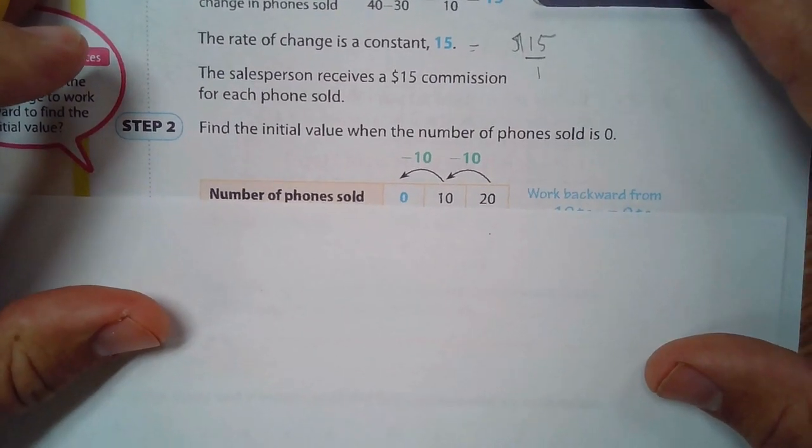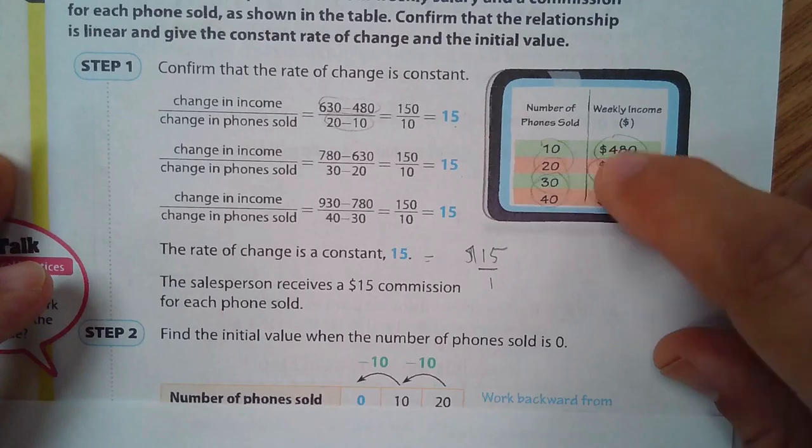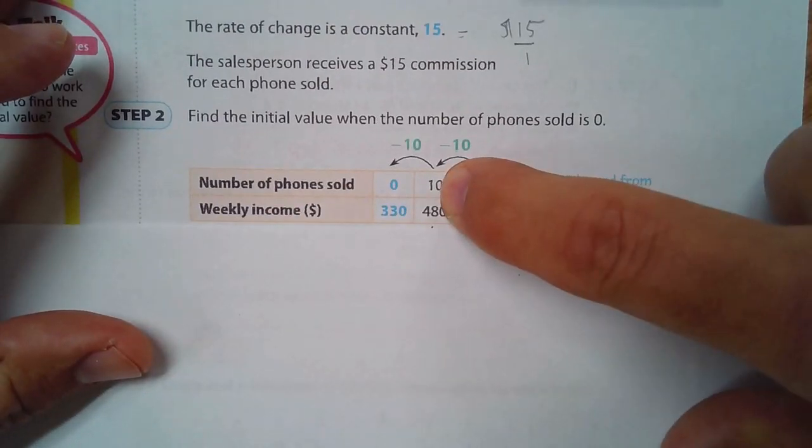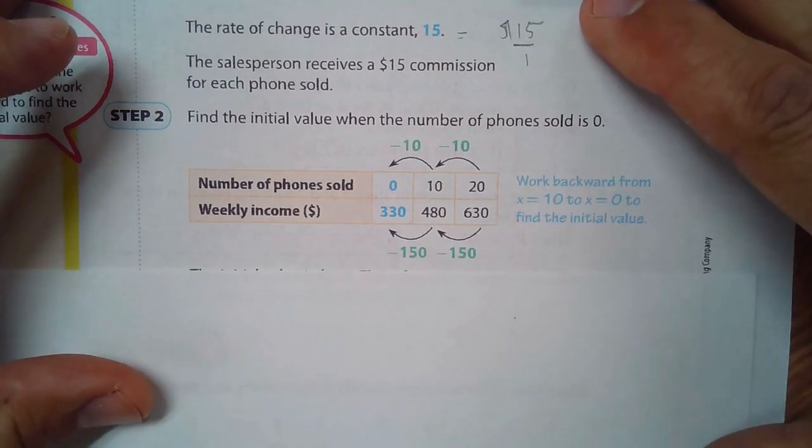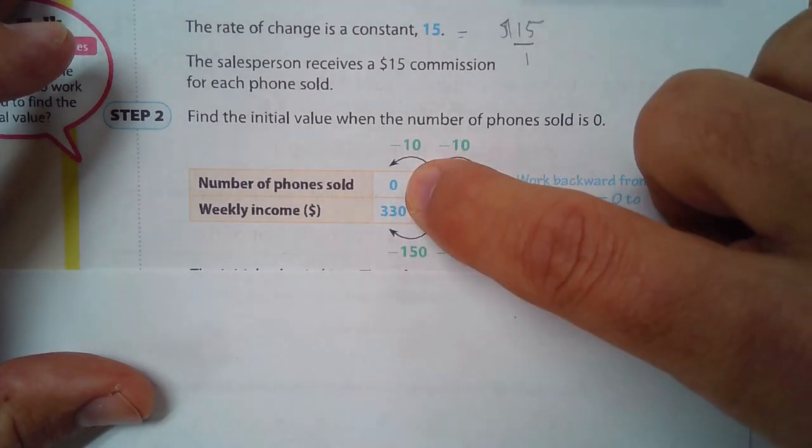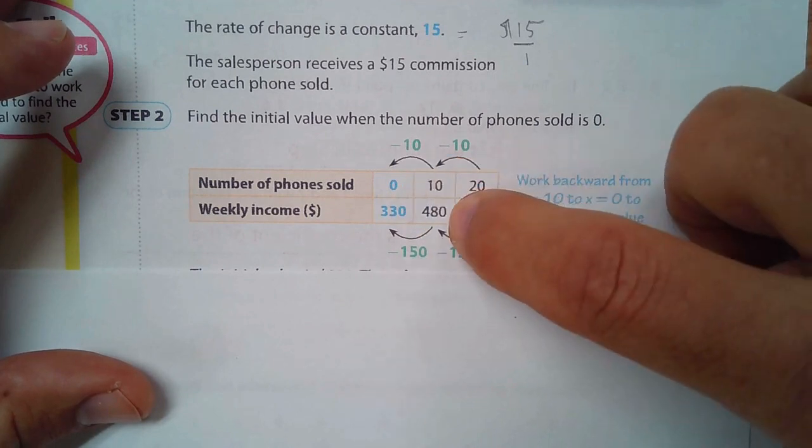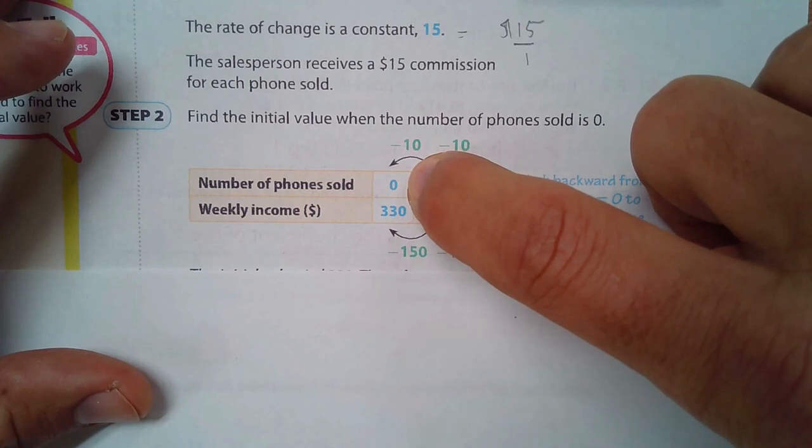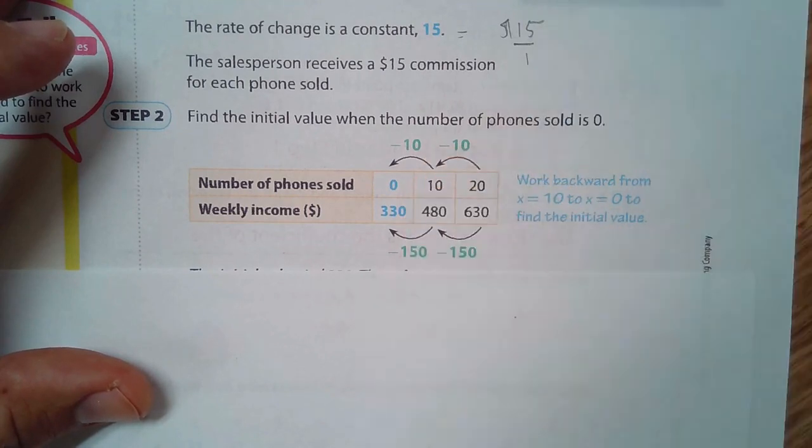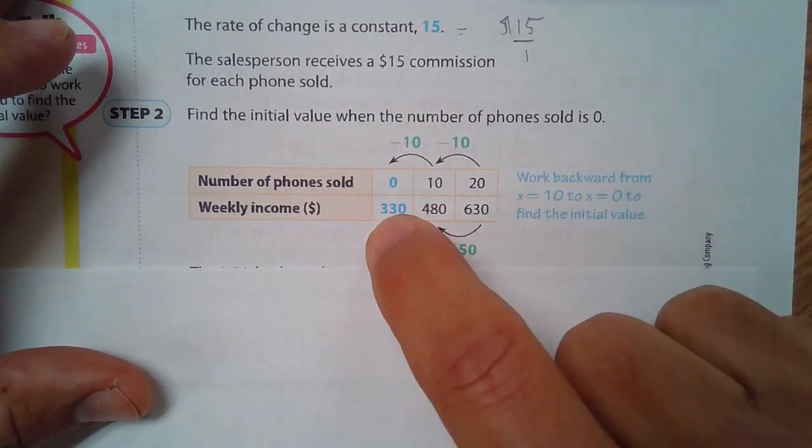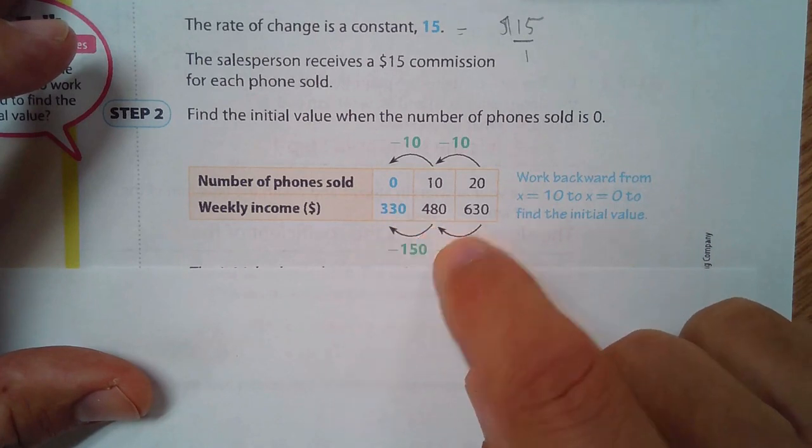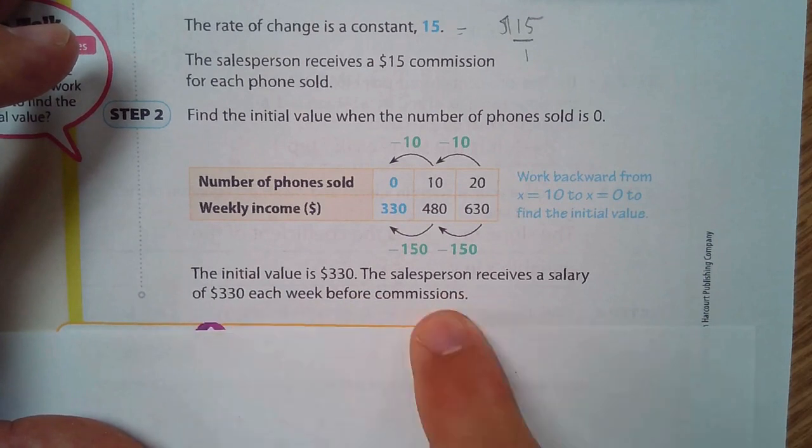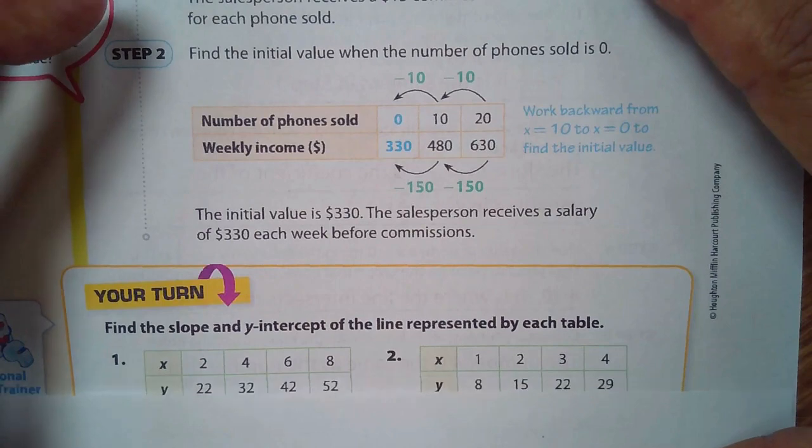We'll find the initial value. If we turn this into a different looking table, we can see that as we go back 10 phones sold, we also go back 150 each time. So if we go back 10 again, that's zero phones sold. And if we go back 150, that means it's $330. That means if the salesperson sells zero phones, that person gets paid $330, which means that is the weekly salary. You sell nothing, you still get $330. But once you sell stuff, you get $15 for each phone that you sell. Initial value is $330 before commissions.